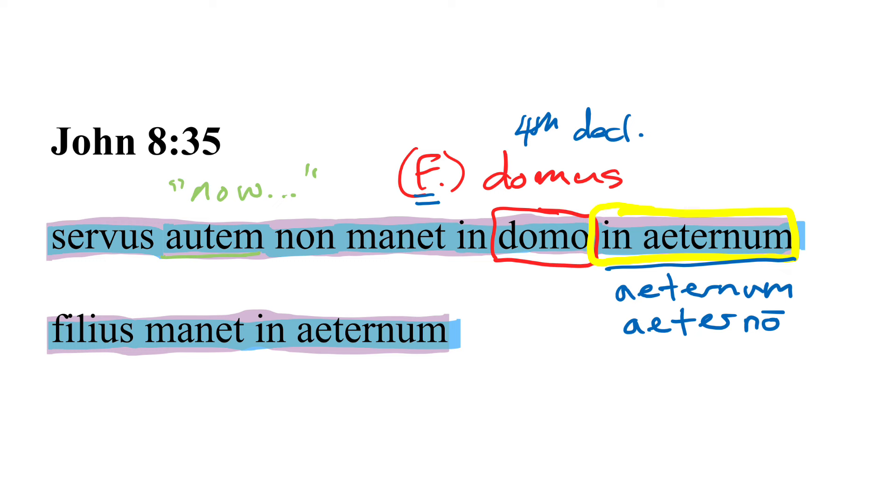But in aeternum occurs in good classical authors as well. It seems to become more frequent, at least that's my subjective impression, after these translations of the Bible into Latin become more common. This becomes a particularly common phrase among Christians. But there you have it. Filius manet in aeternum. There we see it again. And of course, these won't be the only times that we meet it in the Gospel of John.